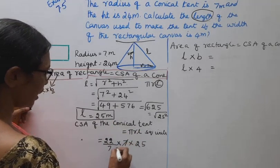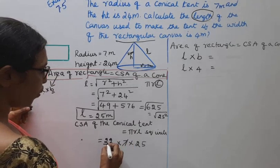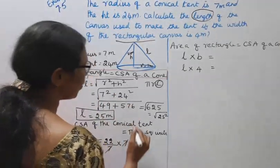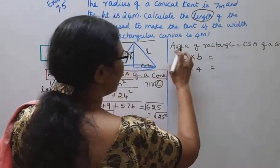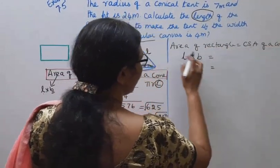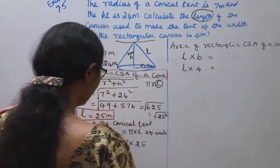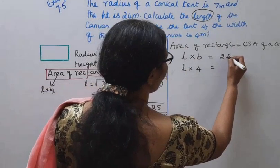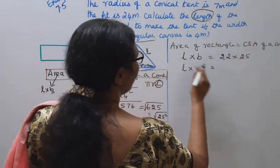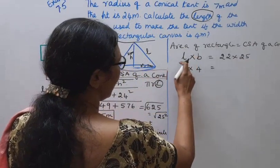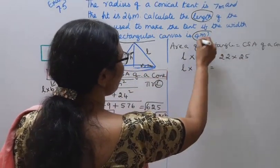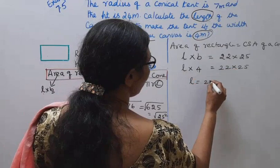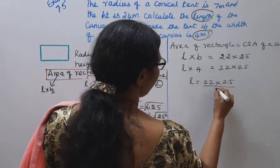22 into 25. Area of rectangle = L × B. L is unknown. B, the width, is 4 meters. This equals 22 × 25. Now L = (22 × 25) ÷ 4.